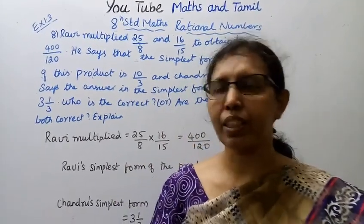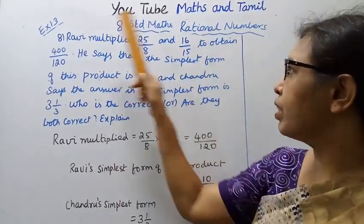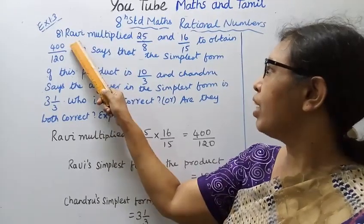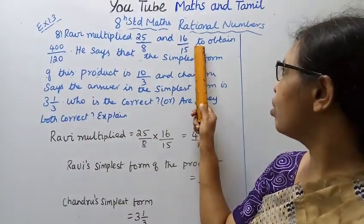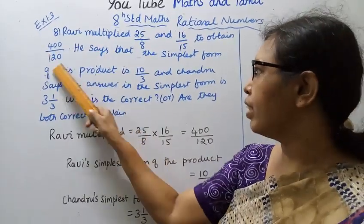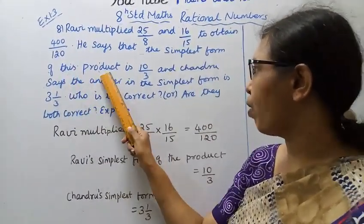Hello students, welcome to Maths and Tamil channel. Class 10 Maths, Term 1, Rational Numbers, Exercise 1.3, Question 8. Ravi multiplied 25 by 8 and 16 by 15 to obtain 400 by 120. He says that the simplest form of this product